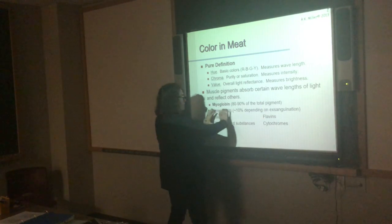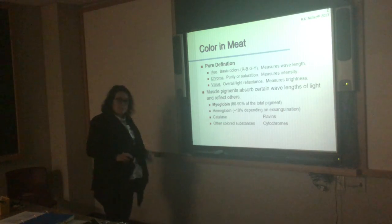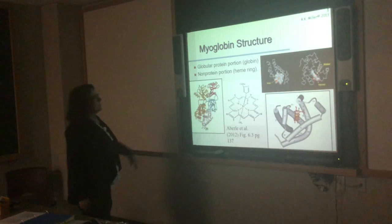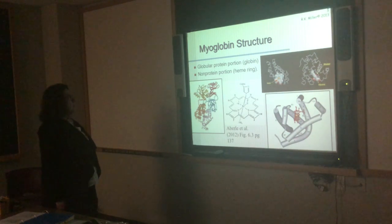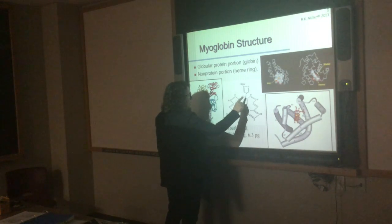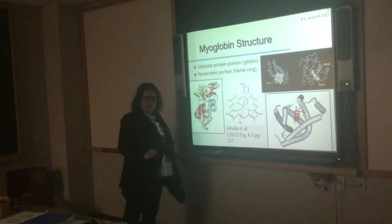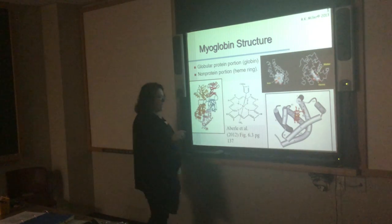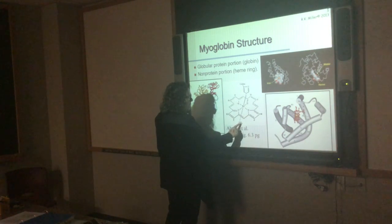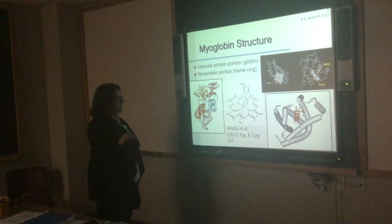Most of the pigment is from myoglobin, so we'll talk about that first. Myoglobin is a globular protein — it has a globular portion and a heme ring. In the textbook picture, here's the globular protein, this is the heme ring, and iron has six binding sites — you can see it in a ring with nitrogen bound. It has a ligand that has the ability to bind different ions or compounds.